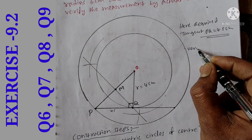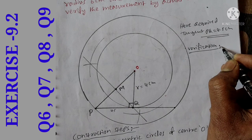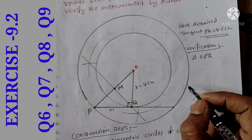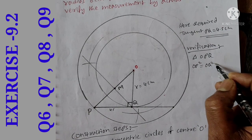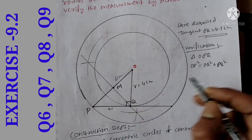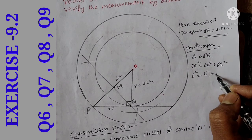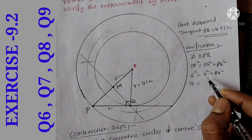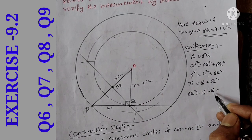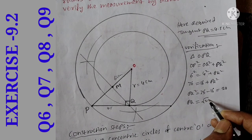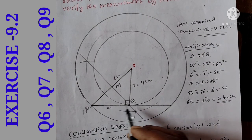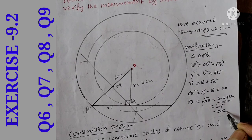Verification: from triangle OPQ, OP² = OQ² + PQ². So 6² = 4² + PQ². That gives 36 = 16 + PQ², so PQ² = 36 − 16 = 20. Therefore PQ = √20, which is approximately 4.47 centimeters. Since our measured value is 4.5, it is approximately equal to 4.47. It is verified.